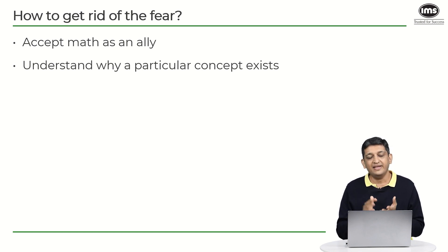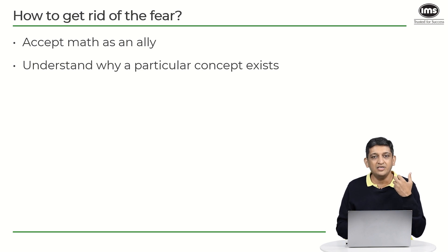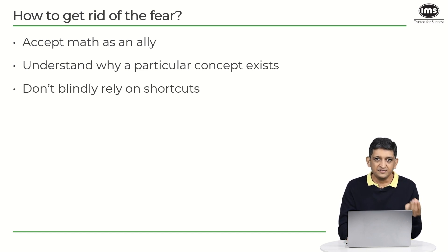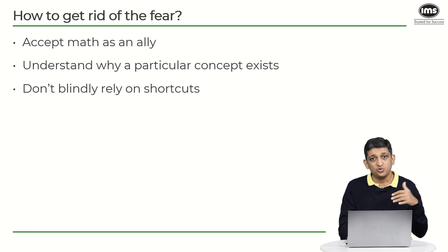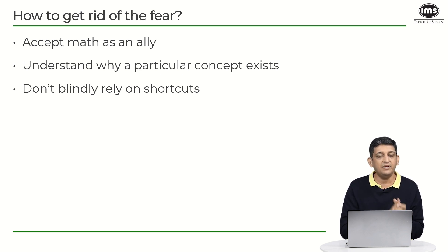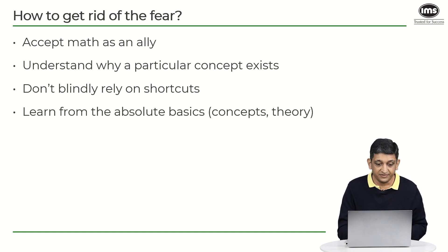The second thing is to understand why a particular concept or theorem exists. If you treat math as a list of 50 things to mug up, you will never remember everything correctly. You have to understand why a concept exists to be able to apply it. Don't blindly rely on shortcuts — if someone tells you a shortcut, make sure you know the logic behind it. If you can't convince yourself why you're using a shortcut, don't use it, as it will do more harm than good.